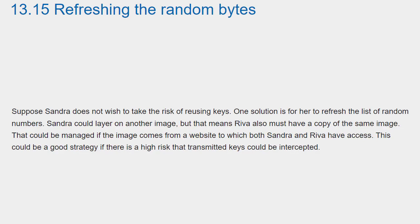Suppose Sandra does not wish to take the risk of reusing keys. One solution is for her to refresh the list of random numbers. Sandra could layer on another image, but that means Reva also must have a copy of the same image. That could be managed if the image comes from a website to which both Sandra and Reva have access. This could be a good strategy if there is a high risk that transmitted keys could be intercepted.